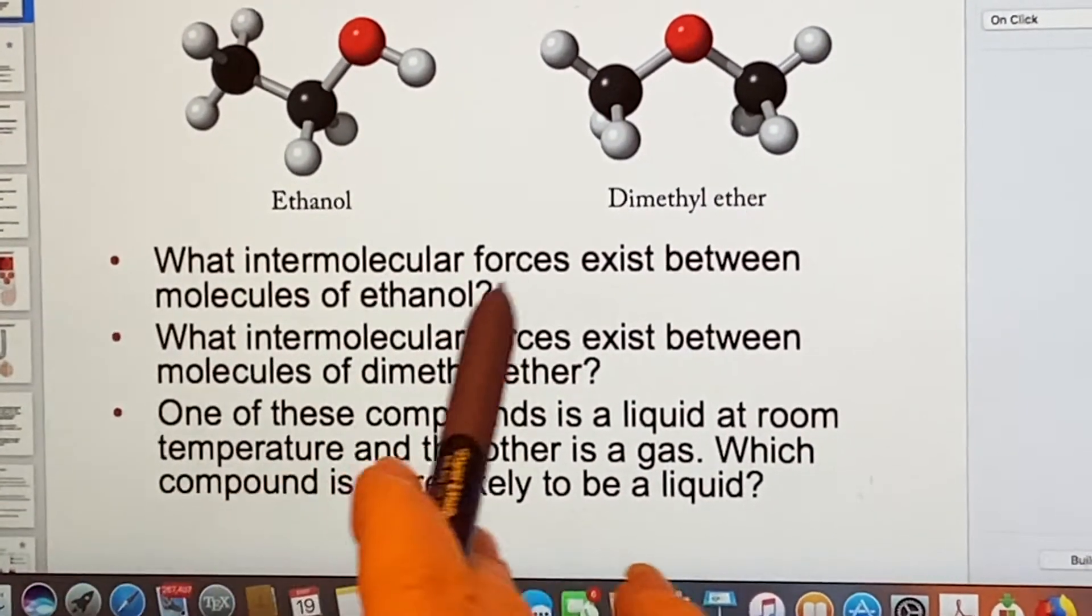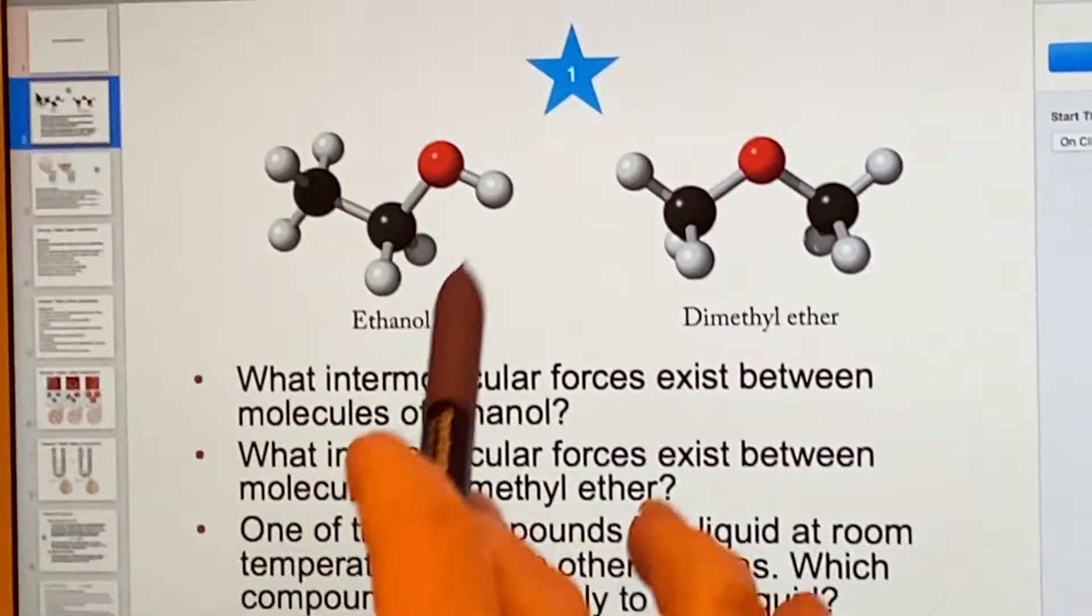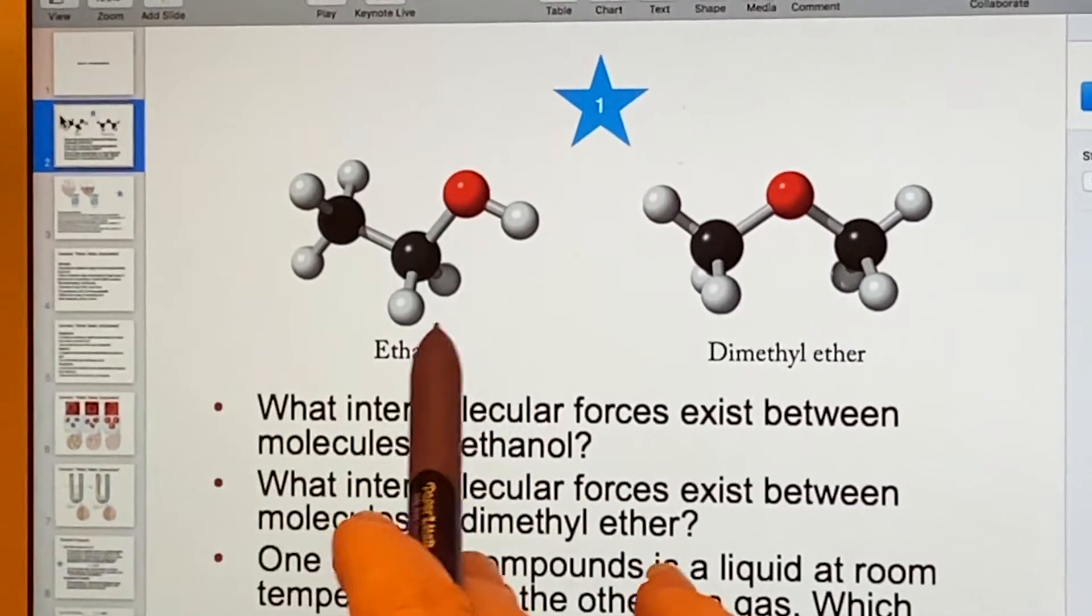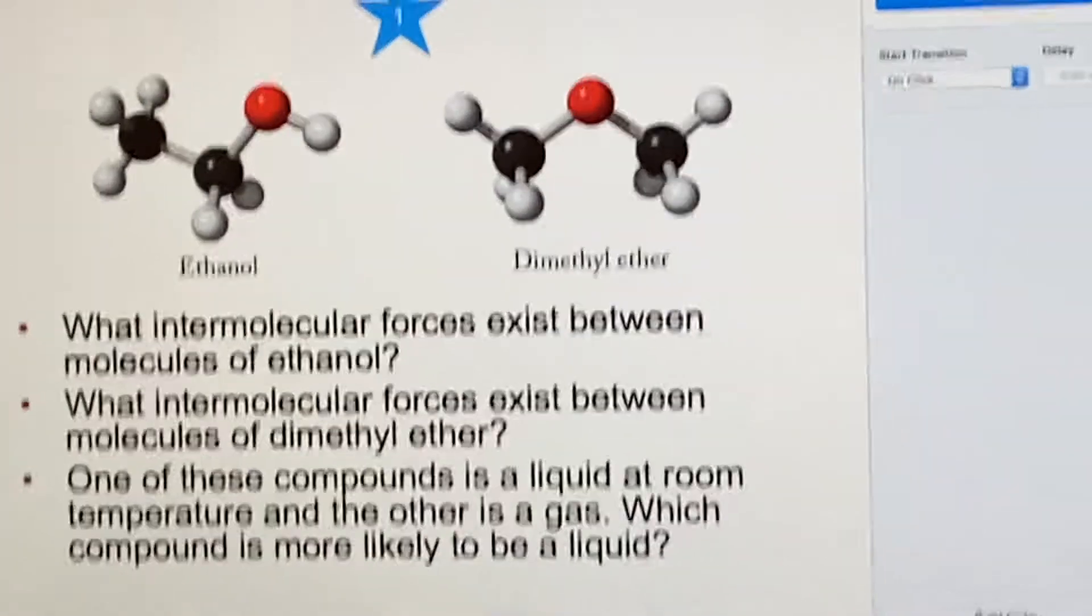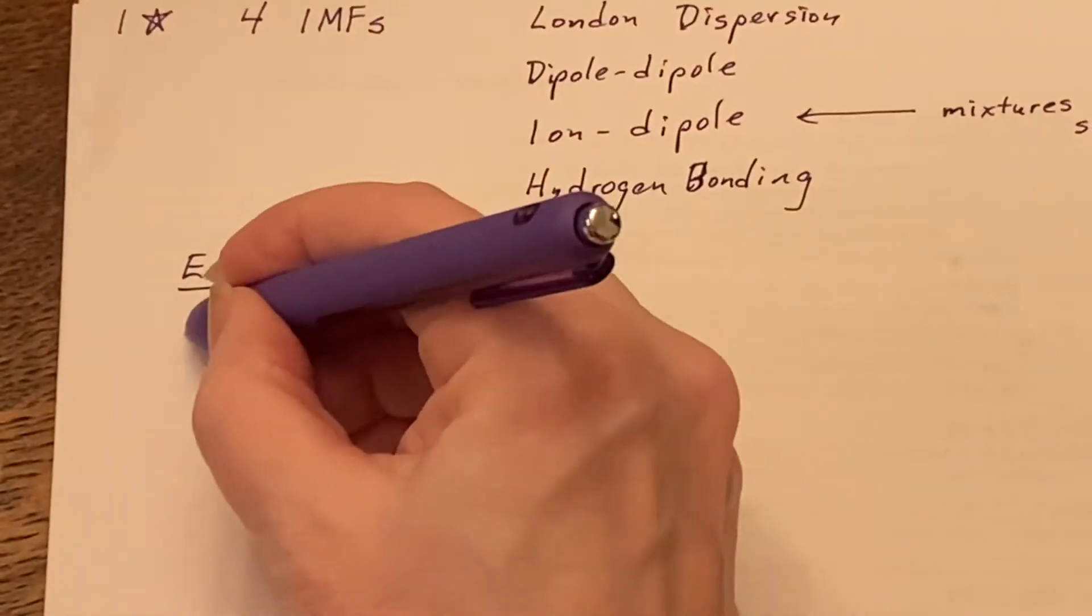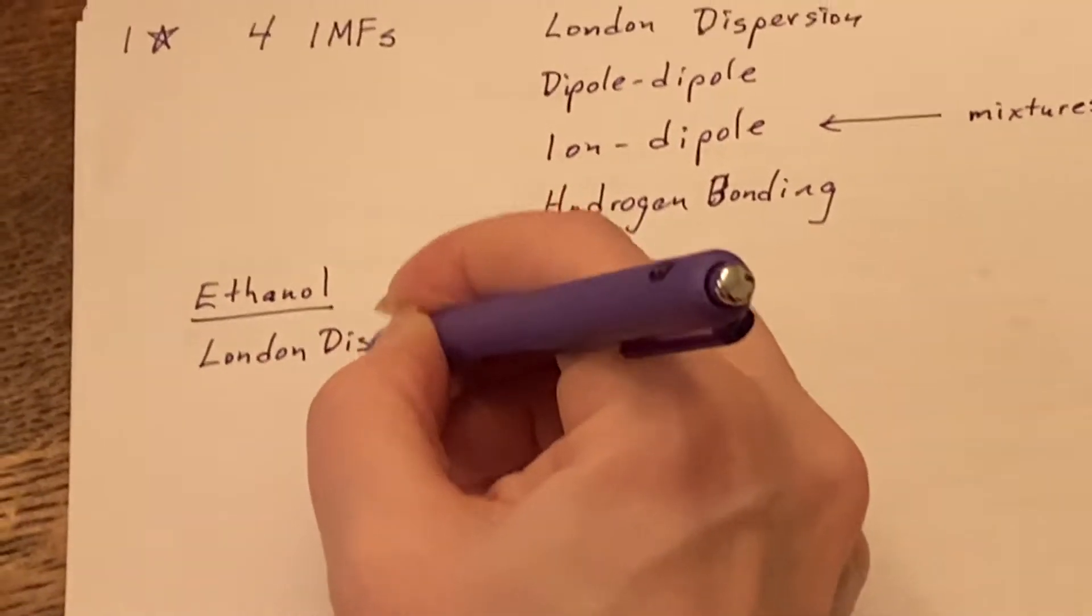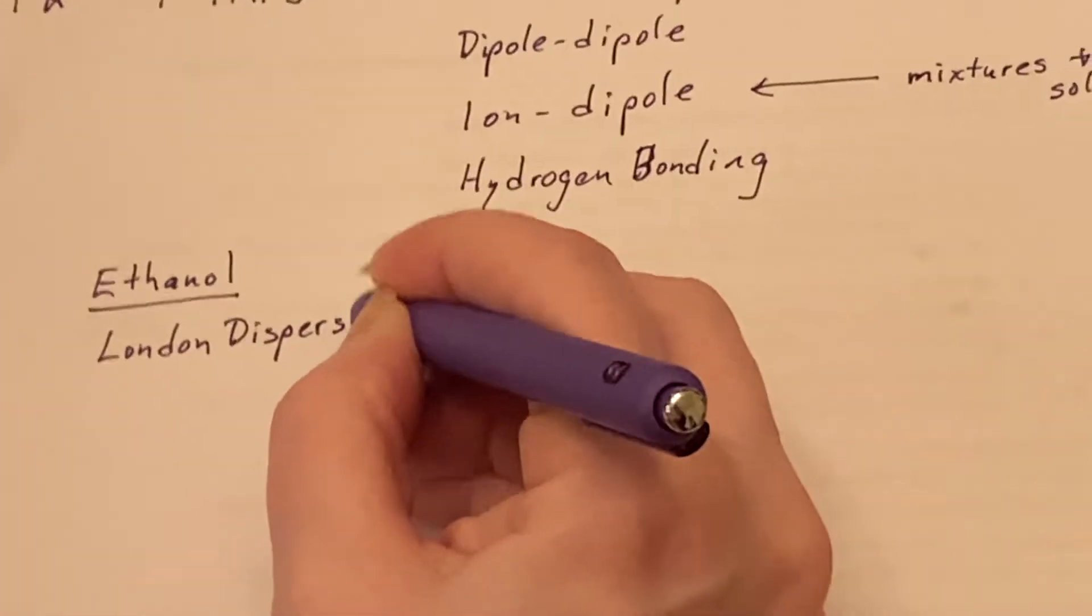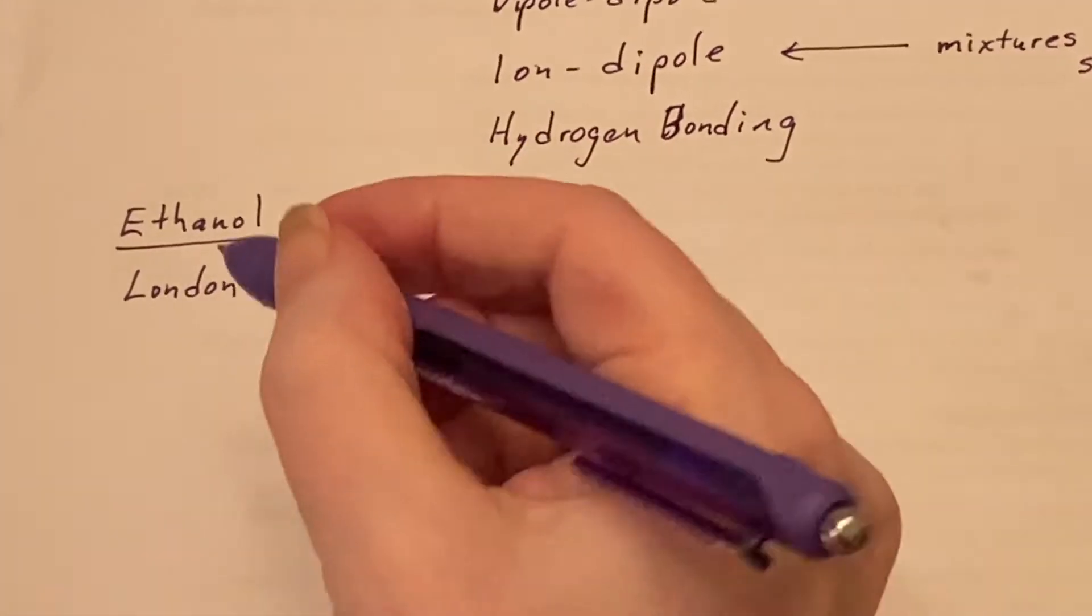what intermolecular forces exist between molecules of ethanol? So let's just say that our entire beaker is full of only ethanol. What forces are going to exist in ethanol of these intermolecular forces? Well, London dispersion is always around because it has to do with how many electrons there are. Are there electrons? Then you've got London dispersion as a possibility.